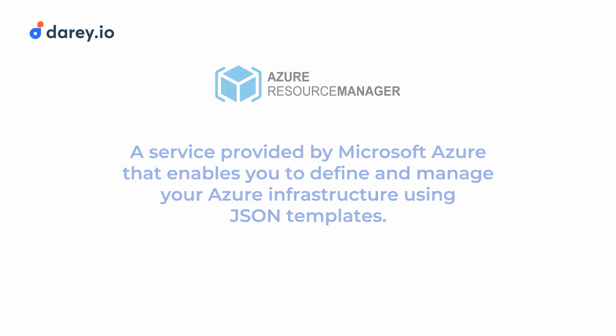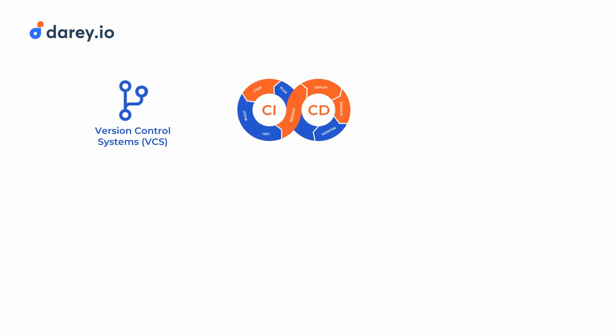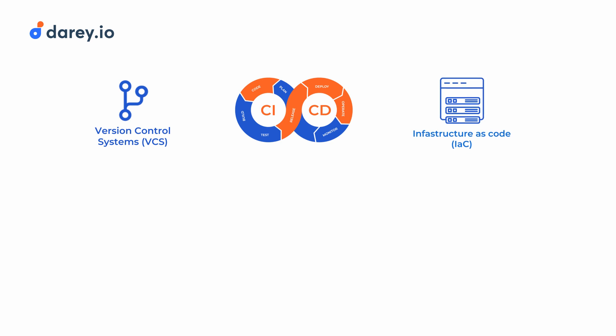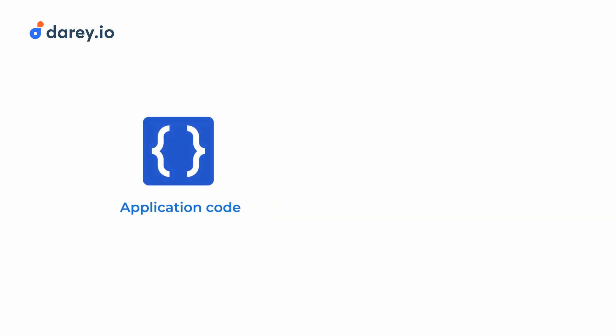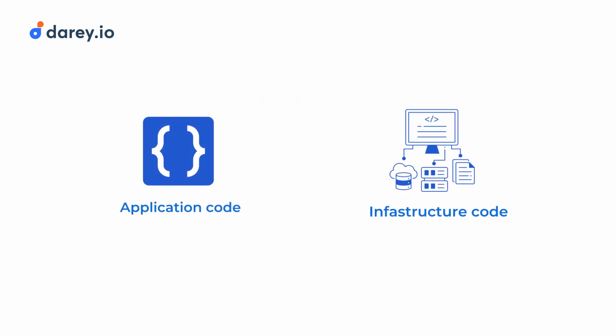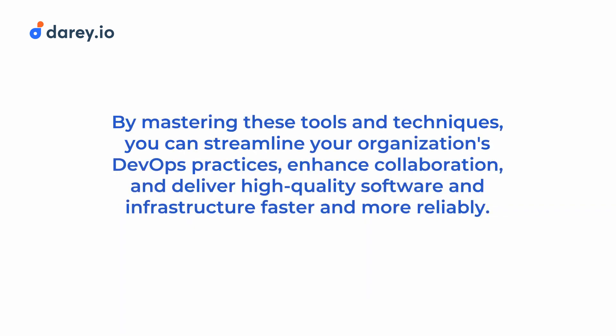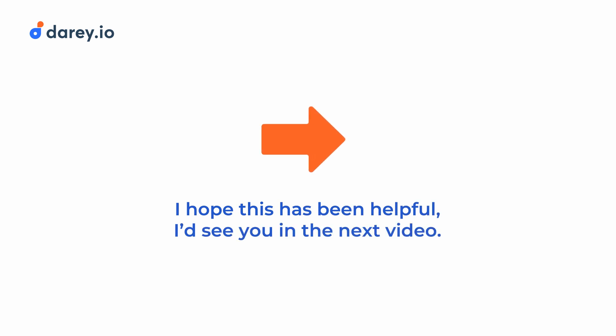In conclusion, the combination of VCS, CI/CD and IAC allows us to create a powerful integrated DevOps workflow that treats both application code and infrastructure code as first-class citizens. By mastering these tools and techniques, you can streamline your organization's DevOps practices, enhance collaboration, and deliver high-quality software and infrastructure faster and more reliably. I hope this has been helpful — I'll see you in the next video.